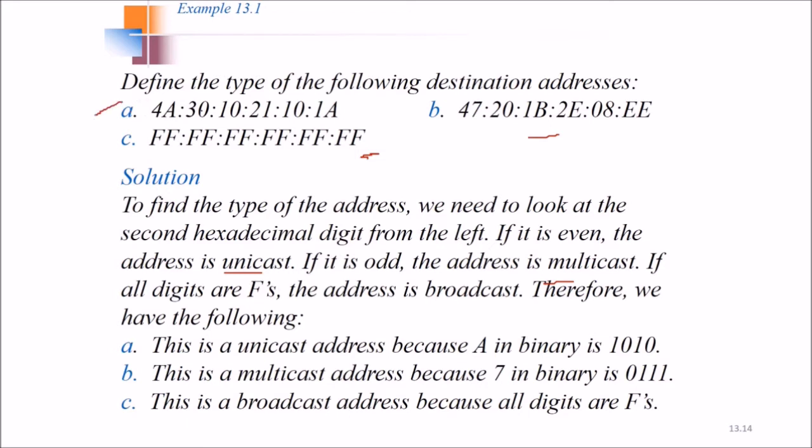We have the following observations: This is a unicast address. Why? Because A, this one, in binary is 1010. So it shows that it is unicast. And then this one, the second one we see, we look at the second hexadecimal digit from the left. What is this? 7. 7 in binary is 0111. So if we have 1 here, this shows that it is a multicast. So if all Fs are there, the destination address or the type of address is the broadcast address.